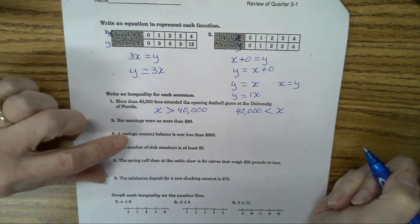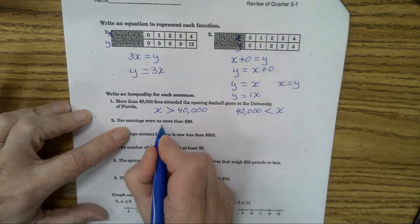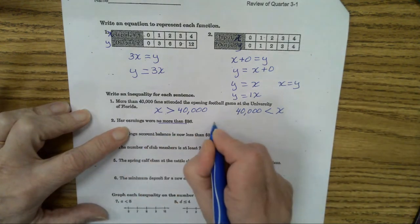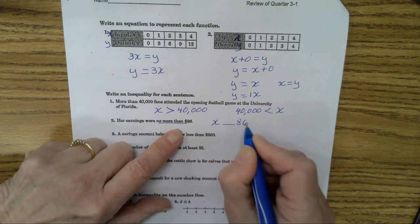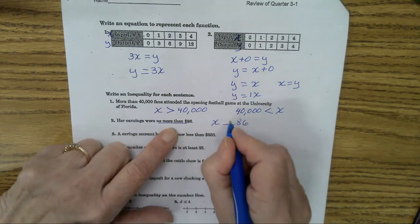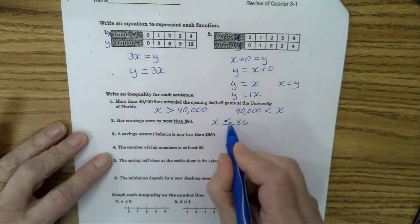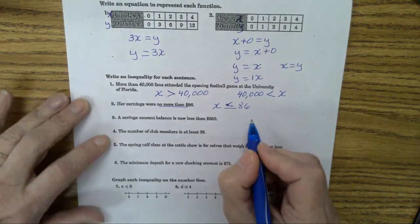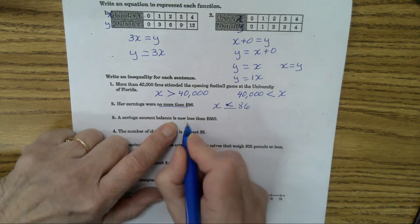Now we're going to write an inequality for each one of these sentences here. More than 40,000 fans attended the opening football game. x is more than 40,000. It's not equal to. It's more than. You could write it this way. You could say 40,000 is less than x. Both of those would be right. But x tells you there are more than 40,000 fans. Her earnings were no more than $86. Was it $86? Yes. Bigger or smaller? No more than means smaller. So x gets the point. So x is less than or equal to $86.